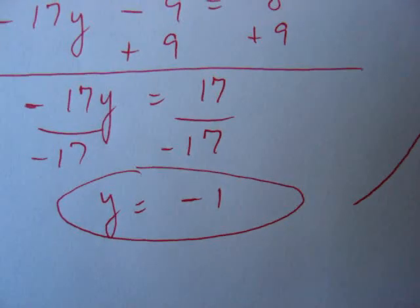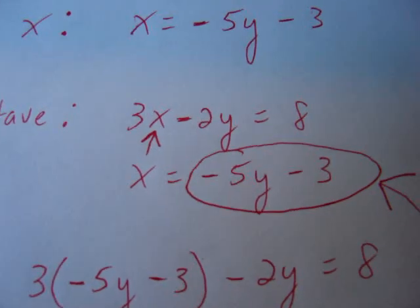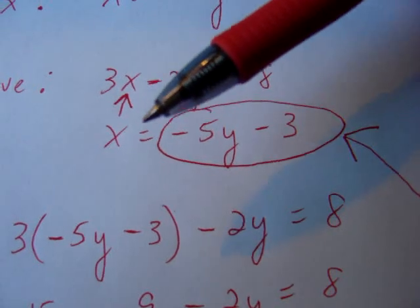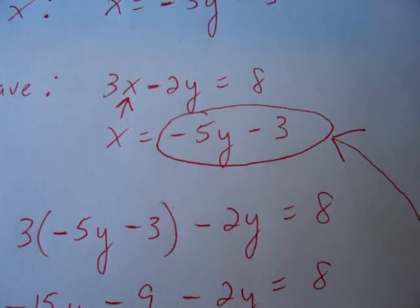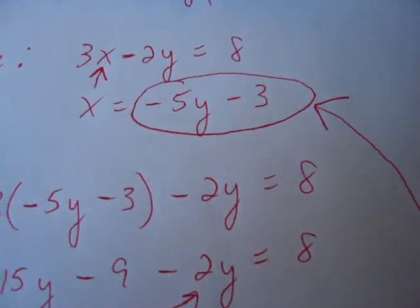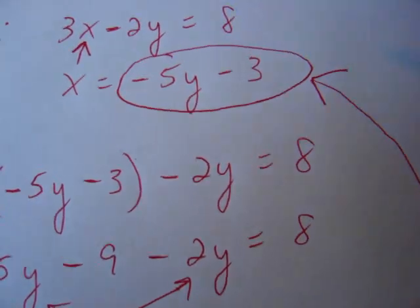The easiest thing to do here is to go back up to the beginning. We had an equation for x: x equals negative 5y minus 3. Well, we just found out a second ago that our y value is negative 1. If the y value is negative 1, I can replace it in there.